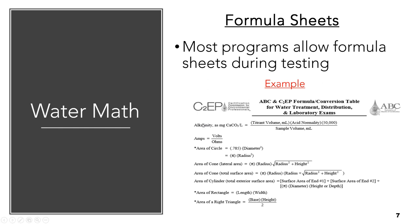I mentioned earlier about formula sheets and the importance of familiarizing yourself with them. Most programs allow formula sheets during testing so that you don't have to memorize all the formulas. This is an example from ABC certifications — they give you a similar formula sheet that comes in several pages. Importantly, it's arranged alphabetically so you can find the particular formula you're looking for. If you have this ahead of time, you'll know where to find things so you don't waste time searching during the exam.